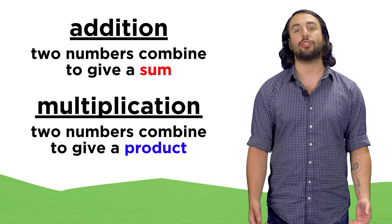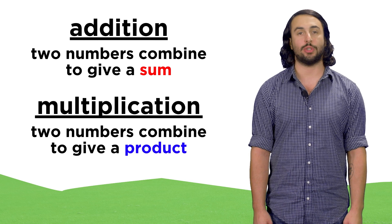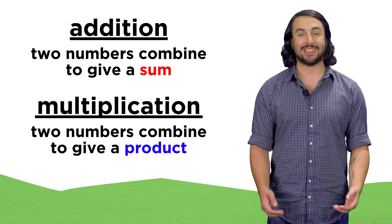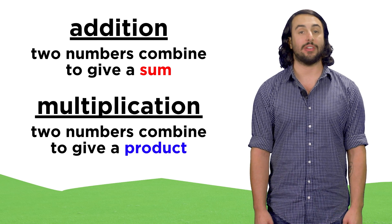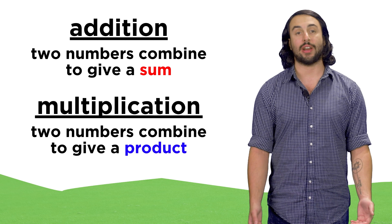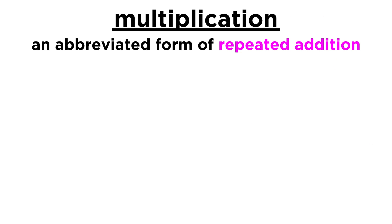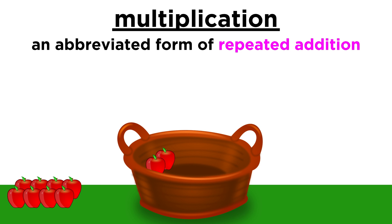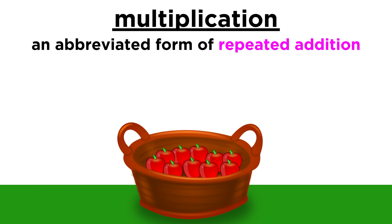Multiplication is similar to addition in that it involves the combination of two numbers to get a single number, but with multiplication this number is not a sum — it is something else, which we can call a product. We can view multiplication as an abbreviated form of repeated addition. Let's go back to our basket of apples and pretend that we start with none. We begin to collect apples and toss them in the basket two at a time: there's two, then two more, again, and again, and then a fifth time.